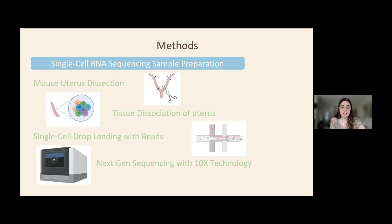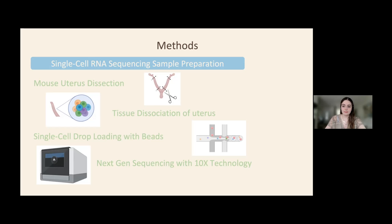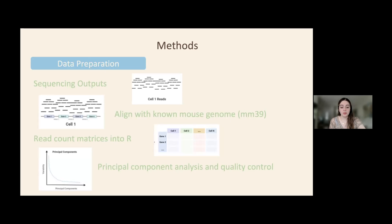The methods used for collecting this data include single-cell RNA sequencing. Euthanization of the mice and dissection of the uterus was necessary, and I was able to shadow many of these dissections and perform one myself. The collected uterine tissues were dissociated by mincing, moving through washes, and placing in solutions to keep the cells alive. Then single cells are dropped and loaded with beads, and next-gen sequencing with 10x technology is completed. Pre-processing of the data included sequencing the outputs, aligning results with the known mouse genome, reading count matrices into R, and completing principal component analysis and quality control.